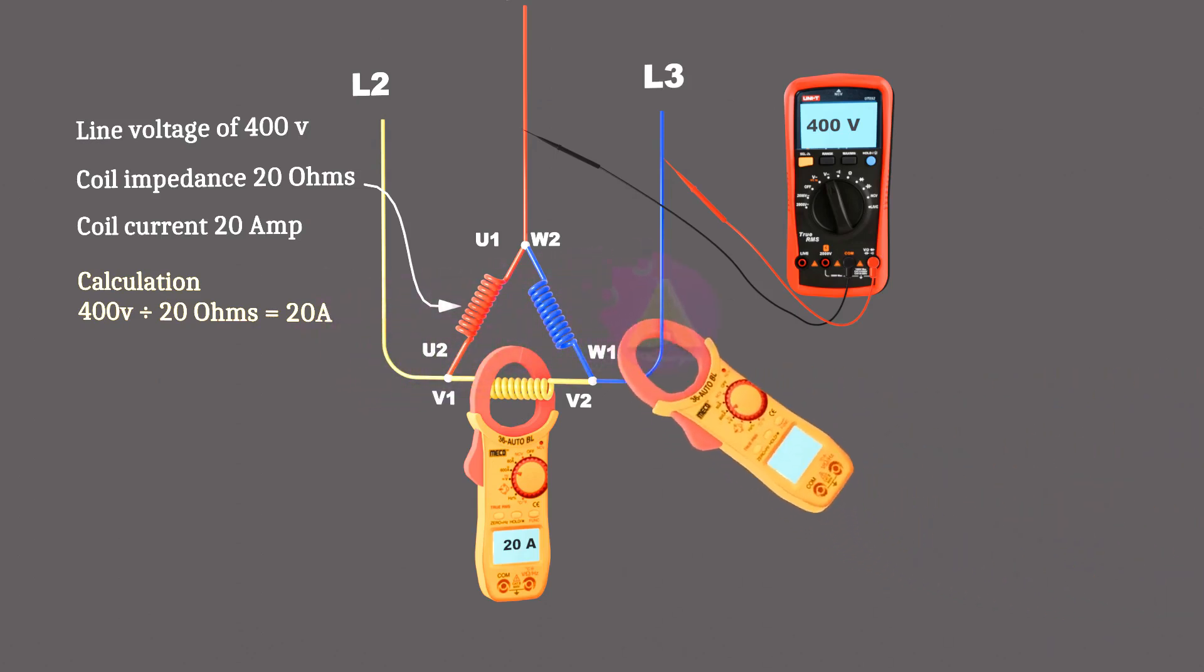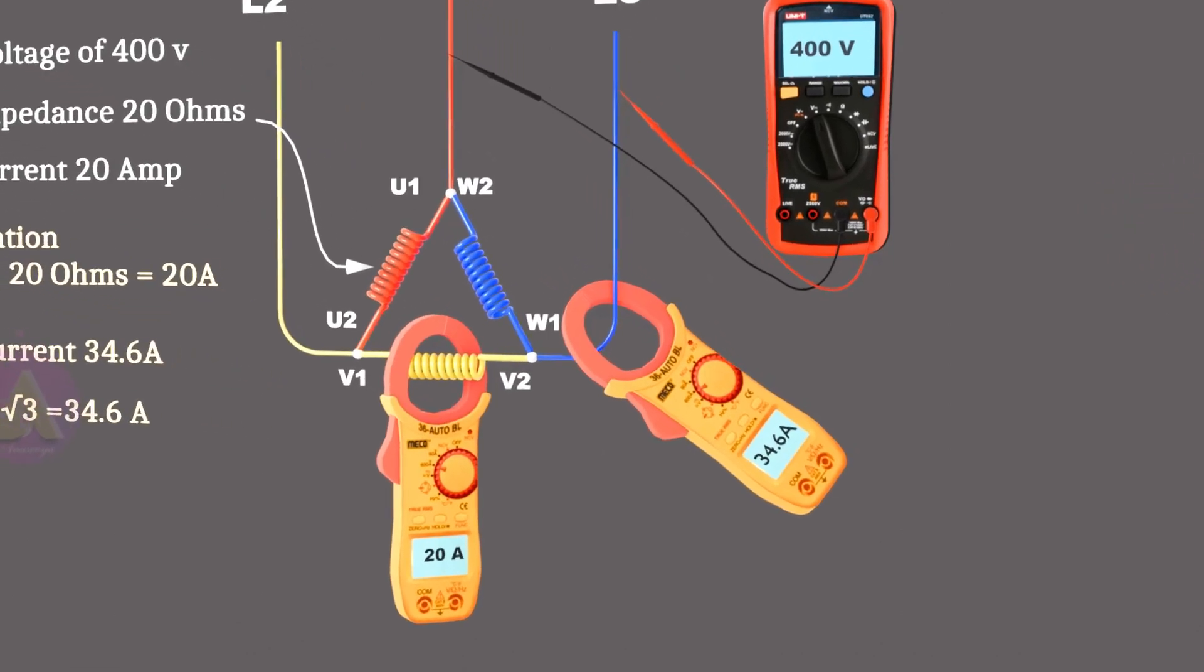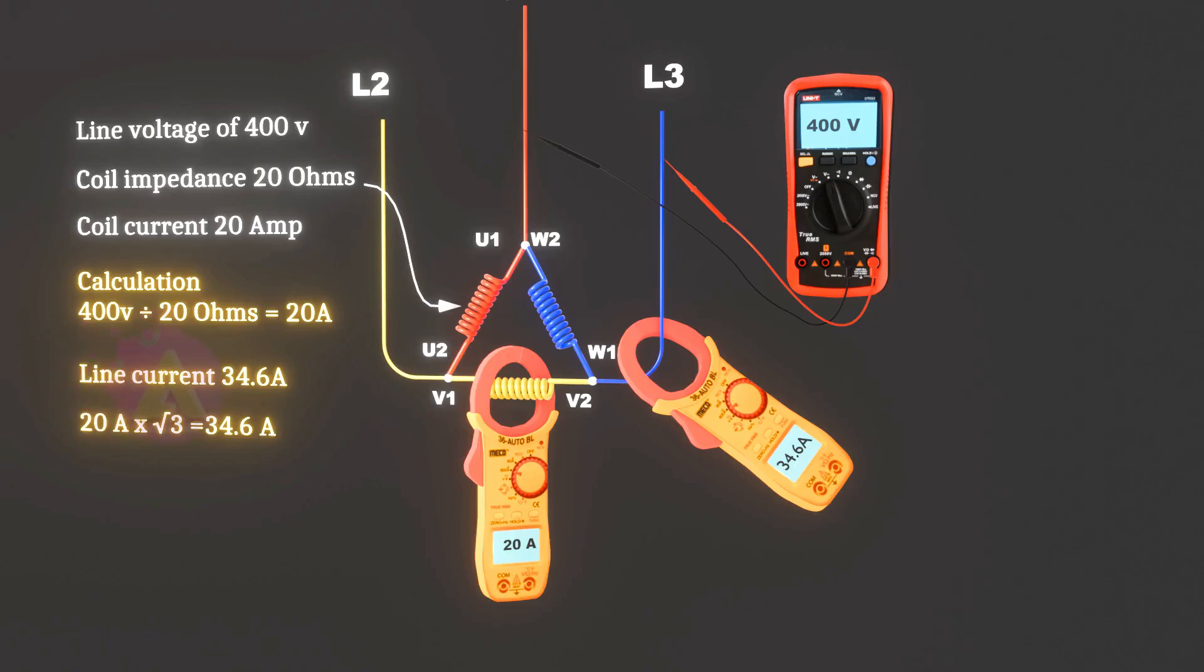But the current in the line will be different—that will be 34.6 amps. We get that from 20 amps multiplied by square root of 3, which is 34.6 amps. That's because each phase is connected to two coils.